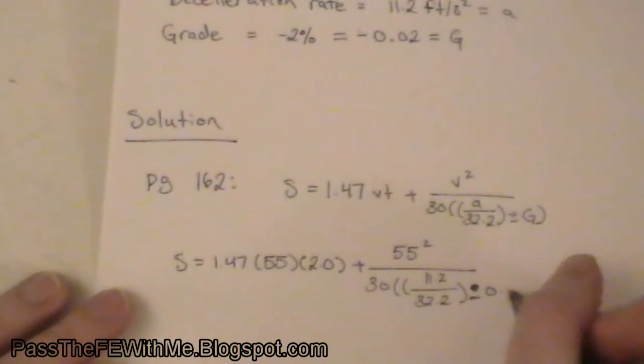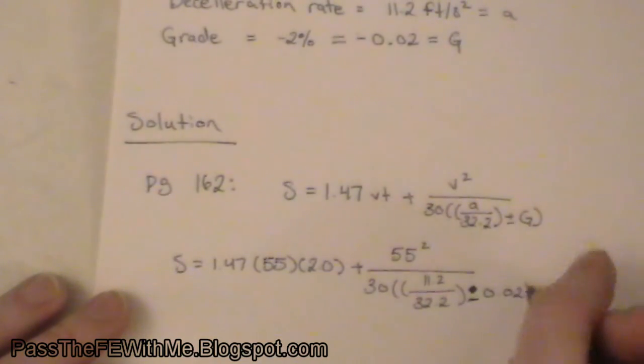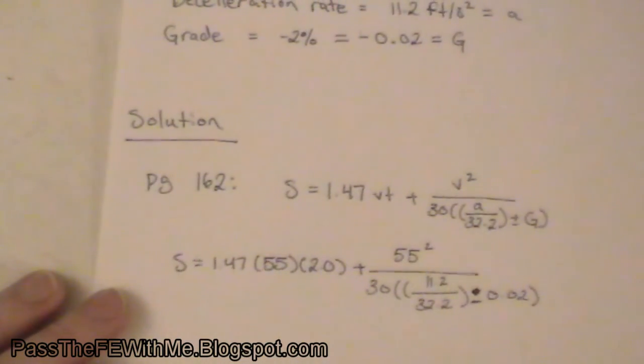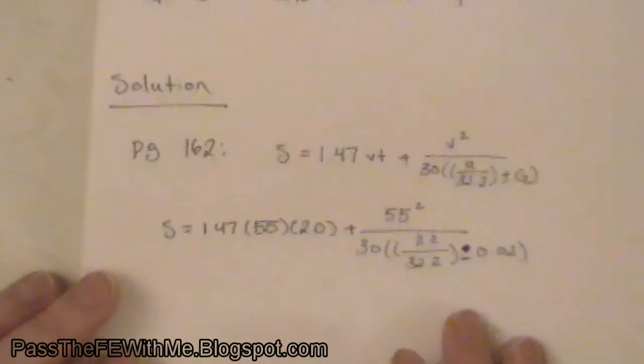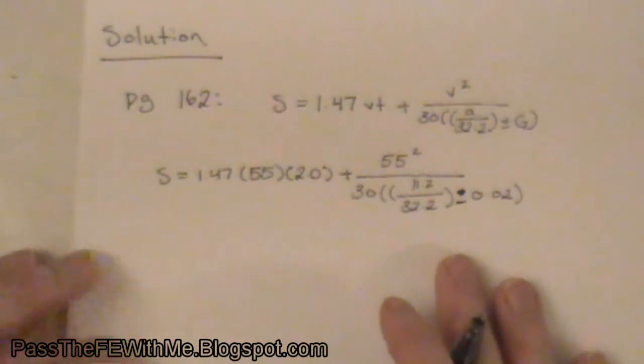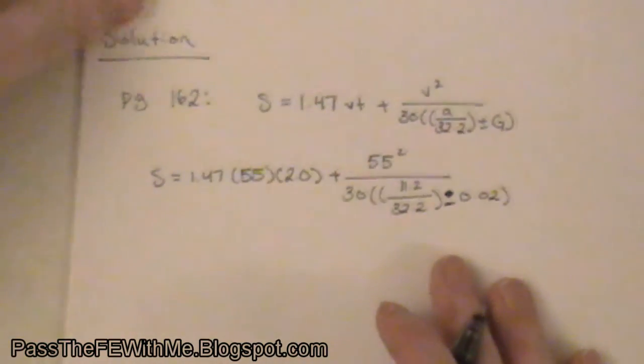So in this case, this is going to be minus, because we're going downhill, so not plus minus. Okay, so get out your calculator, do the math, and you will see that this comes out to 469 feet.